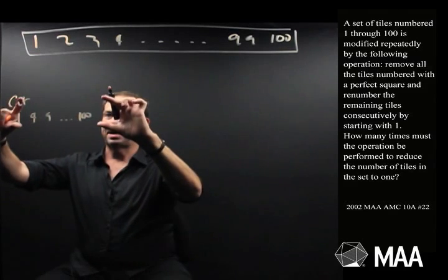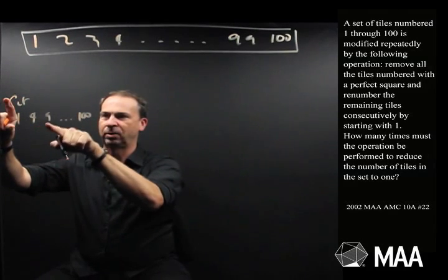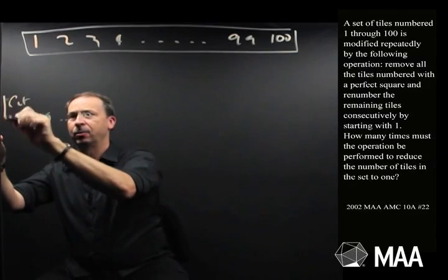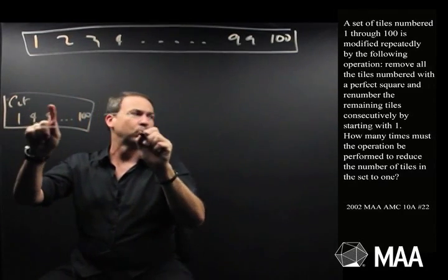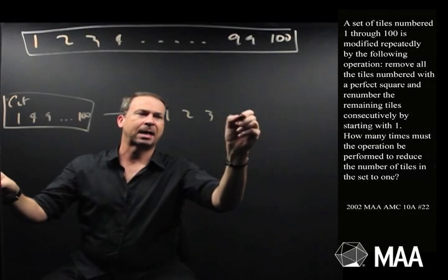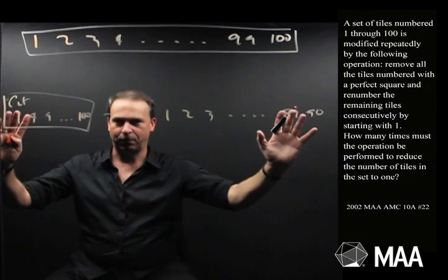So the first step would be cut out these tiles. That's 1 squared, 2 squared, 3 squared, up to 10 squared. There's 10 of these tiles. So there are 90 tiles left which get renumbered 1, 2, 3, up to 89, 90. Step 1.